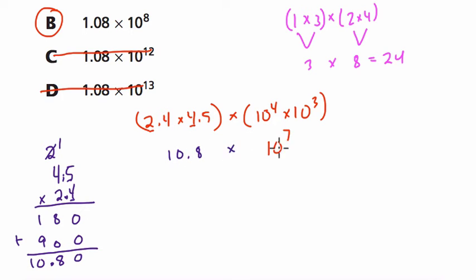So we have 10.8 times 10 to the 7th. However, this is not the answer because this is not yet in scientific notation. The first number in scientific notation has to be between 1 and 10. Also, none of the choices here have a 10 in the beginning. So that means that to maintain equivalence, I want to take 10.8 and divide it by 10. That gets me 1.08.